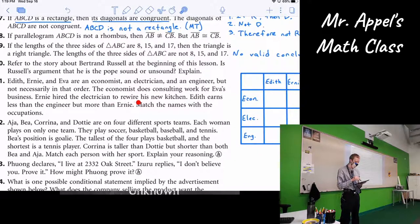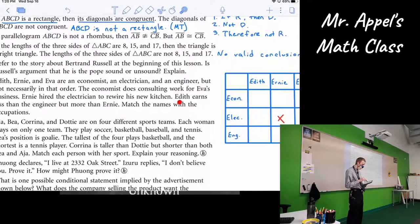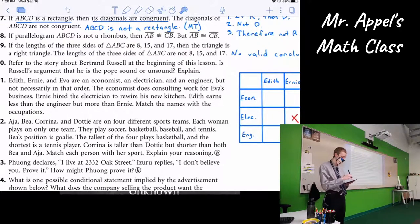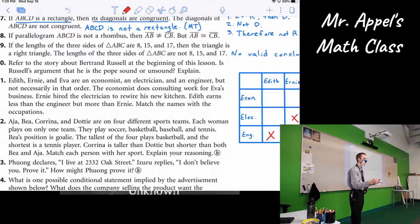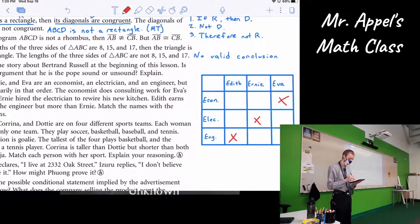She wouldn't do consulting for her own business. She's already there, right? So we can cross that out. Eva is not an economist. Next. Ernie hired the electrician to rewire his new kitchen. If Ernie was an electrician, he doesn't have to hire himself. He would just do it, right? That would be kind of weird. So Ernie is not the electrician. And then we have Edith earns less than the engineer, but more than Ernie. Well, if she earns less than the engineer, then she's not the engineer herself. We can cross that one out. But Edith earns more than Ernie. If Ernie was the engineer, she can't earn less than and more than the same person, right? It's got to be one or the other. So Ernie can't be the engineer either. So we can cross that out. Ernie is not the engineer.